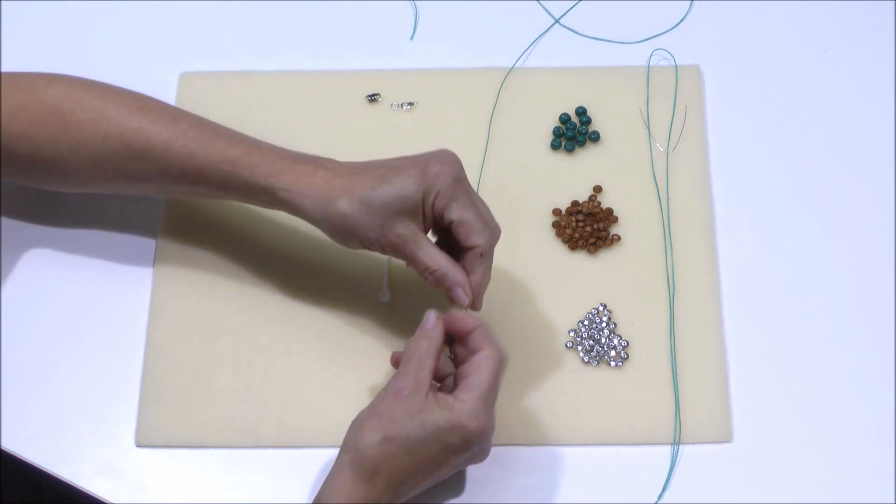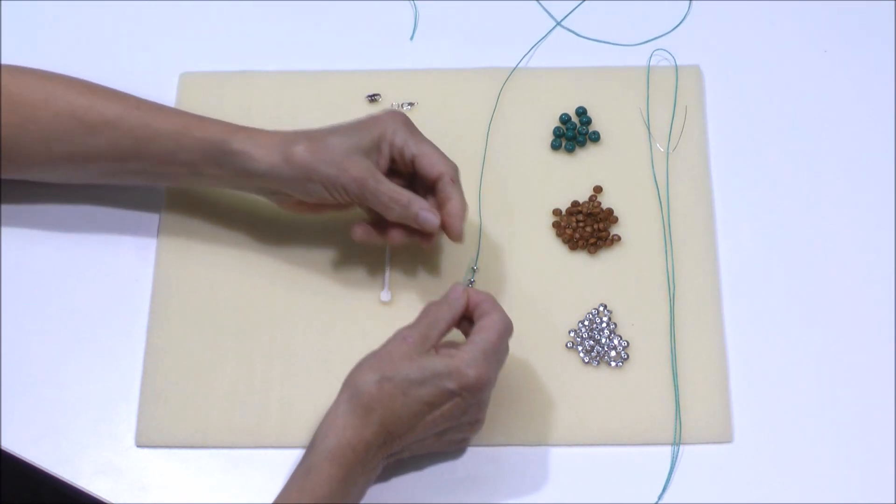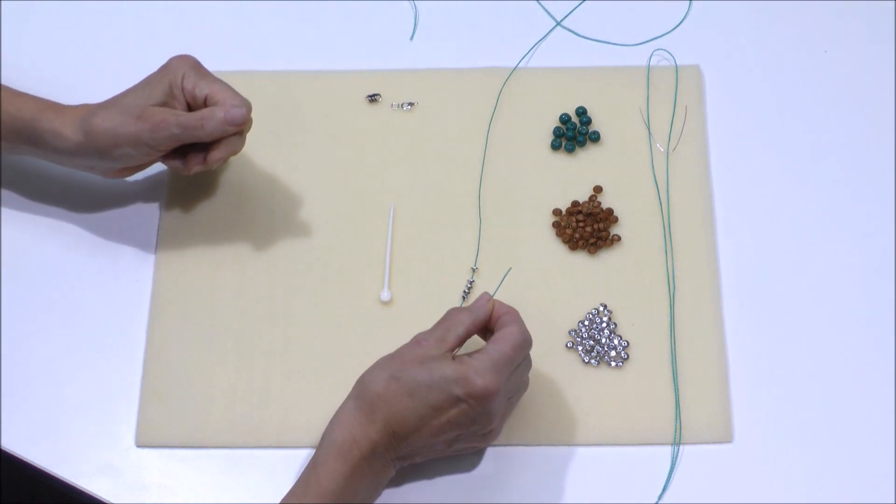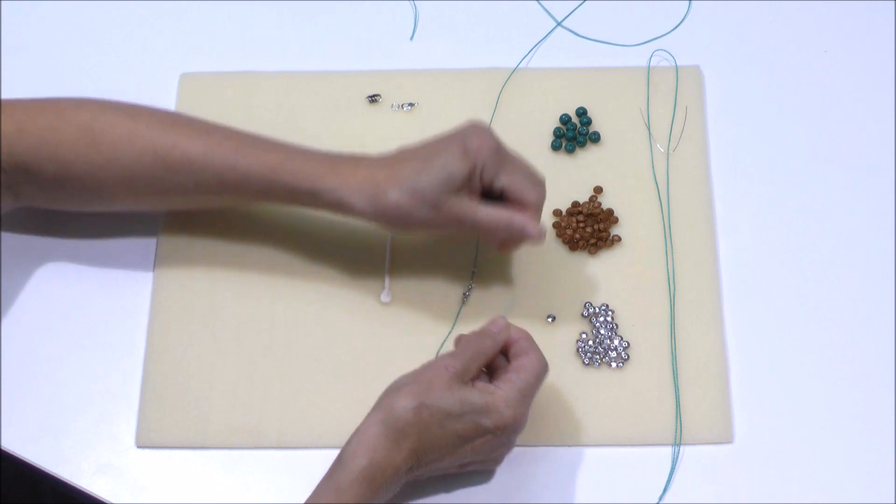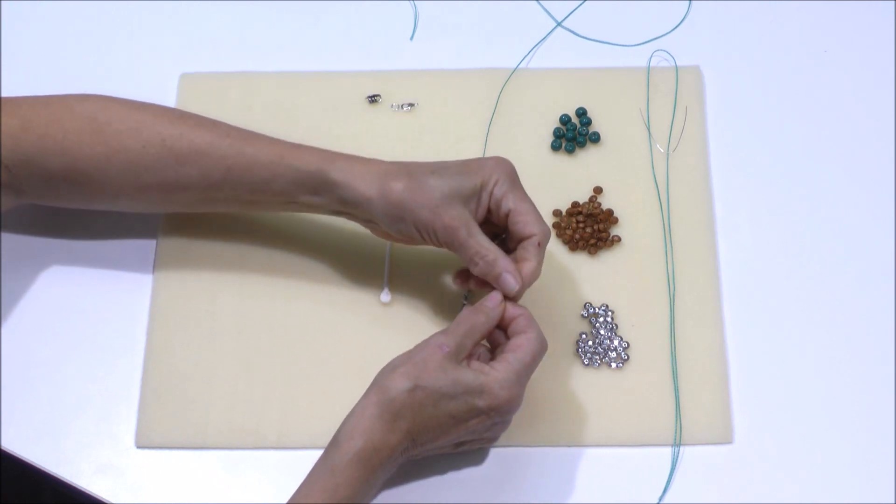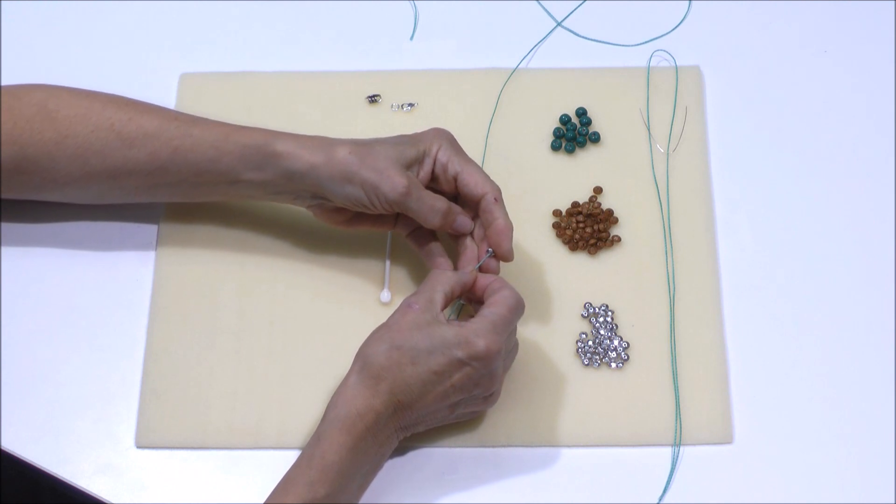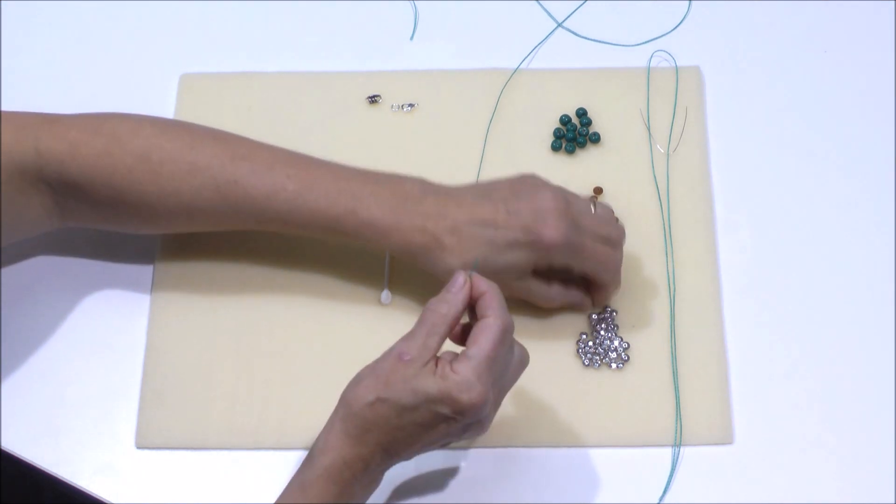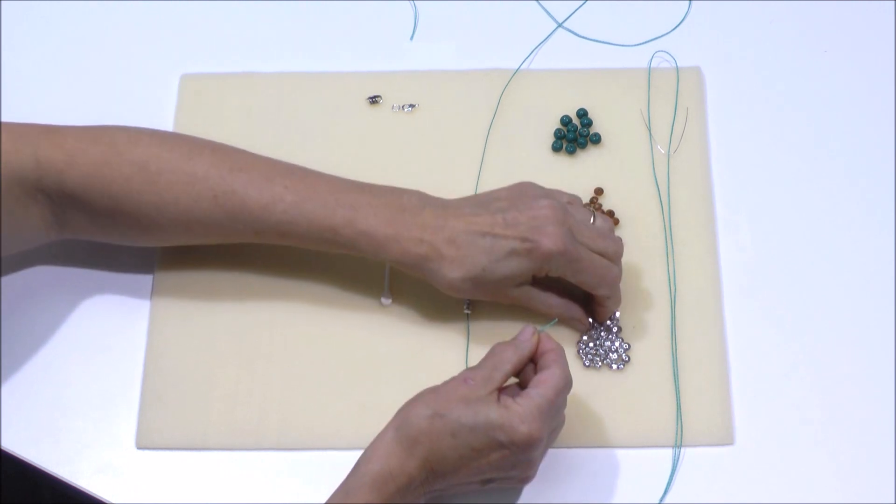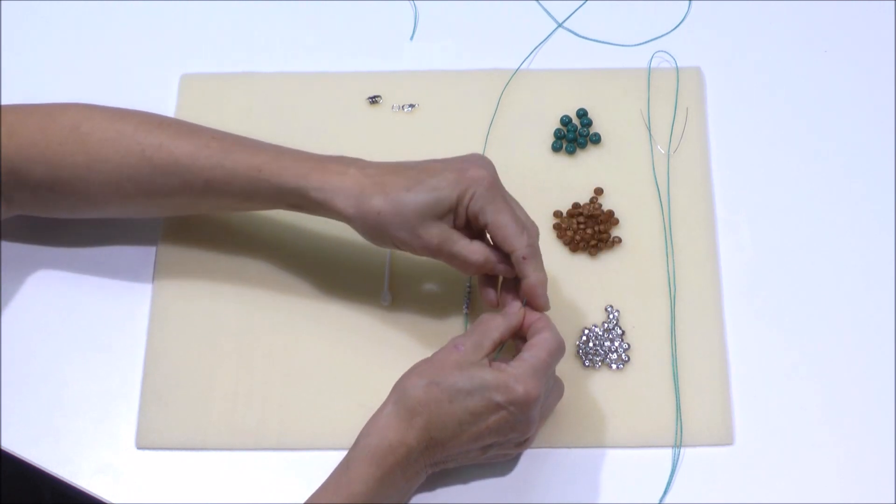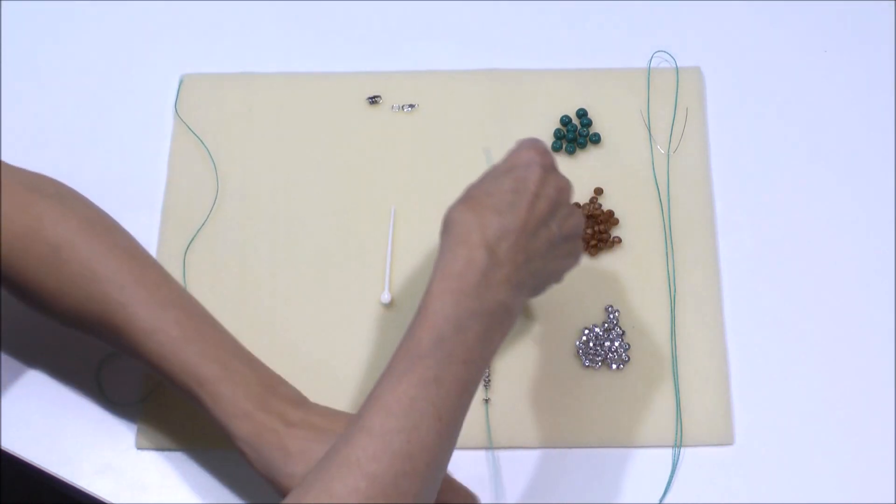First thing we will do is string on some beads, and I've got a few pre-strung here. Again the cord, because it is waxed, sort of serves as its own needle, so if I just pull up on the end it will allow me to just string on some beads, really pretty straightforward. And I'm not going to string them on all right now, I wanted to show you how to do the knotting.